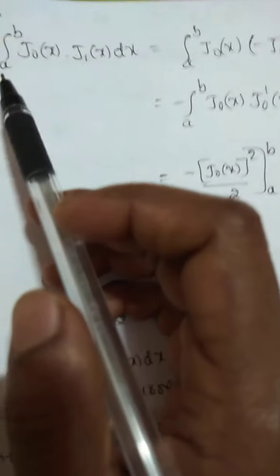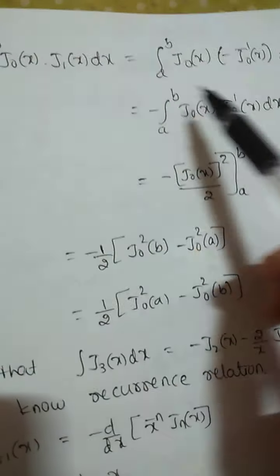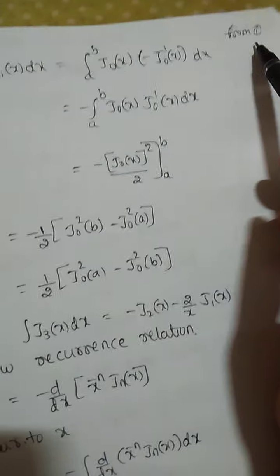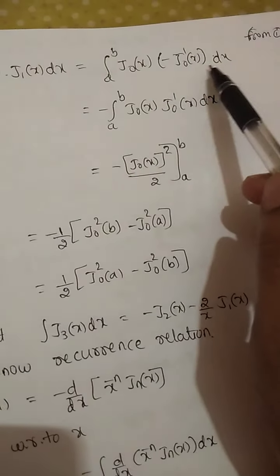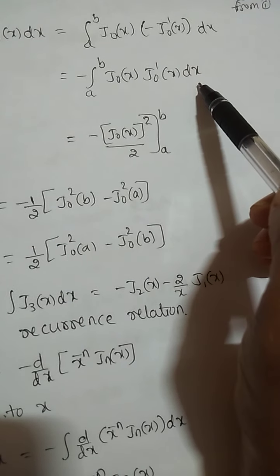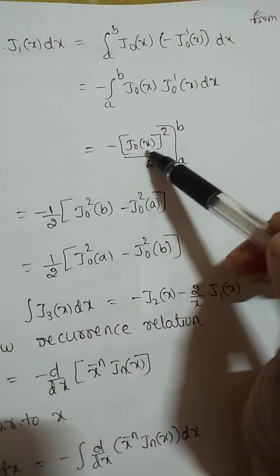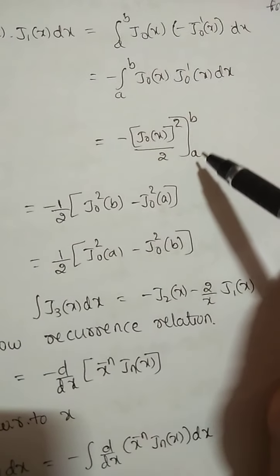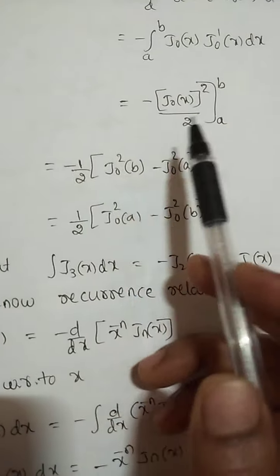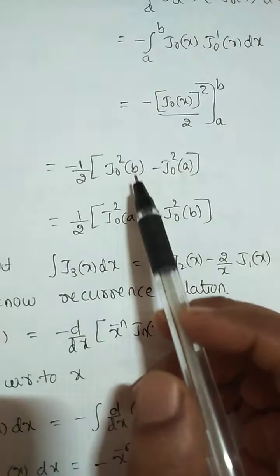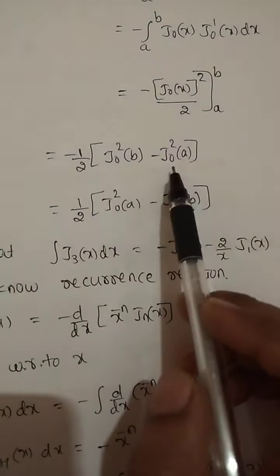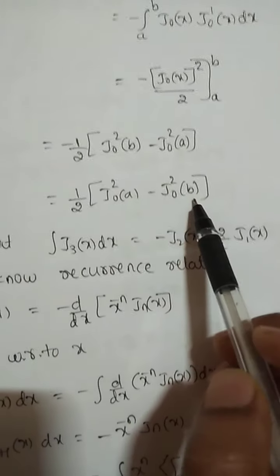For part 2: the integral from a to b of J_0(x) · J_1(x) dx. From part 1, J_1(x) equals minus J_0'(x), so this becomes minus the integral from a to b of J_0(x) · J_0'(x) dx. This equals minus [J_0²(x)/2] from a to b, which gives minus (1/2)[J_0²(b) − J_0²(a)], and taking the minus sign inside yields (1/2)[J_0²(a) − J_0²(b)].